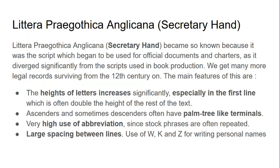We can identify Littera Pre-Gothica Anglicana as a distinct style because we get many more legal records surviving from the 12th century onward. You may remember from earlier palaeography videos that uncial or half-uncial script was used for the writing of charters in earlier centuries, and later insular minuscule was used — the same scripts found in other books. But from the 12th century on, because of much larger and more consistent charter production, we start to get a kind of script used in their writing which differs from the main book hands.